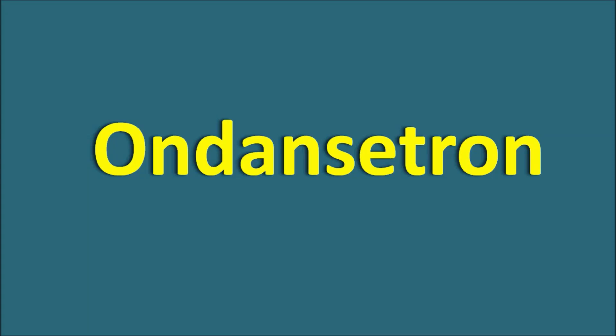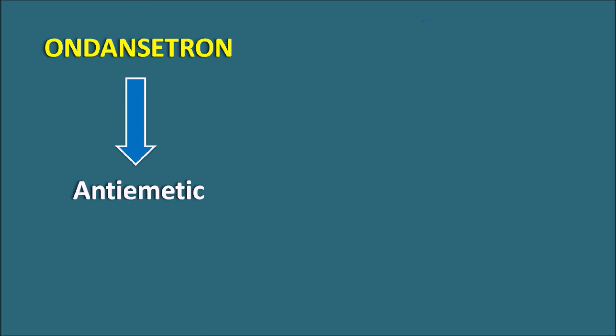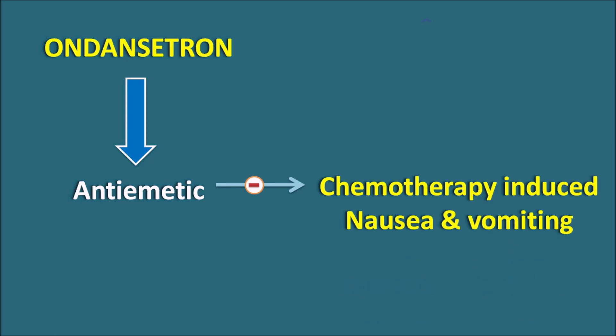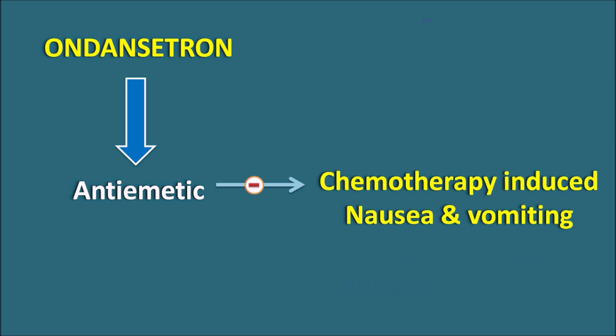Today we will discuss Ondansetron and how this drug acts as an anti-emetic. Ondansetron is used as an anti-emetic, and it can particularly inhibit the emesis produced by chemotherapy. In chemotherapy-induced nausea and vomiting, abbreviated as CINV, Ondansetron can be used, because many anti-cancer agents are bitter substances that can stimulate the chemoreceptor trigger zone (CTZ) and induce emesis.